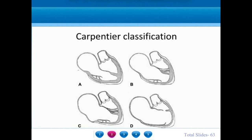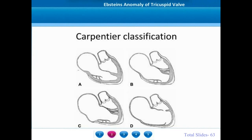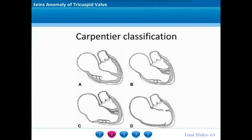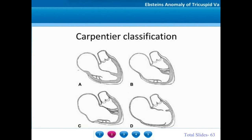In Carpentier type C, the atrialized right ventricle is much larger and the anterior tricuspid leaflet is also tethered, so there is restricted mobility of the anterior tricuspid leaflet. In Carpentier type D, there is almost a total plastering of all the leaflets into the right ventricle, thereby leading to a huge atrialized right ventricle.